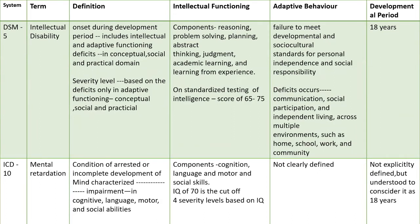In DSM-5, the term used is 'intellectual disability,' defined as a condition with onset during the developmental period, having deficits in intellectual and adaptive functioning in conceptual, social, and practical domains. Severity is based on deficits in adaptive functioning. Intellectual functioning deficits include reasoning, problem solving, planning, abstract thinking, judgment, academic learning, and learning from experience. On standard testing, an IQ score of 65–75 is used for diagnosis. For adaptive behavior, there must be failure to meet developmental, social, and cultural standards of personal independence and social responsibility, with deficits in communication, social participation, and independent living across environments such as home, school, work, and community. The developmental period is defined as up to 18 years.